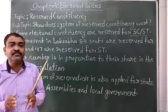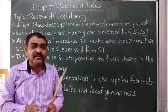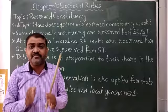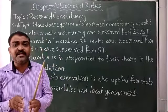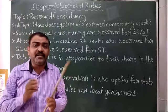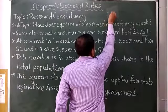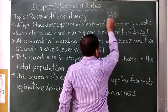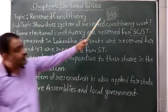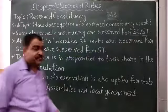Those electoral constituencies are reserved for Scheduled Castes (SC) and Scheduled Tribes (ST). If we talk about the Lok Sabha elections, Lok Sabha has a total of 543 seats. Some of these seats out of 543 are reserved for SC and ST.